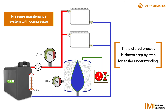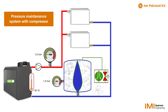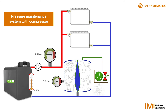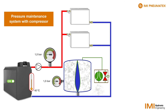If the pressure drops down to 1.5 bar, the compressor switches on and starts pushing air into the vessel. The butyl bag is compressed further and the water is pumped back into the system. The system pressure increases again to 1.7 bar and the compressor switches off.